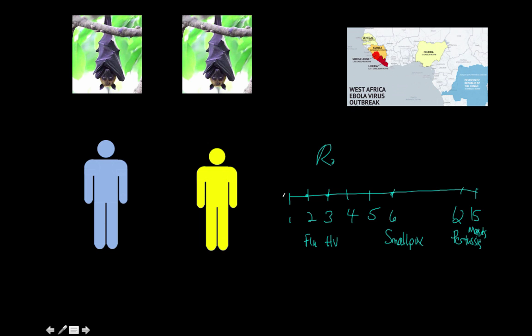So Ebola, believe it or not, scientists estimate that the R-naught for Ebola is about 1.5. So for every person sick with Ebola, they're likely to spread that infection to 1.5 other people.